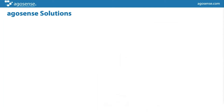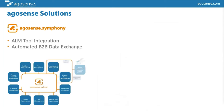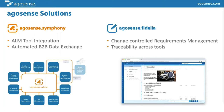Our solutions: what we're talking about today is Argosense Symphony, focusing on automated B2B data exchange. On the other hand, the system is also available for ALM internal tool integration — if you have different ALM products in-house, you can use Symphony for that as well. We also have our requirements management platform, which has an extremely modern, browser-based architecture and is as feature-rich as other products on the market, but with significantly lower total cost of ownership.